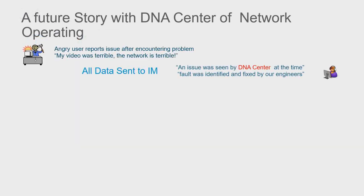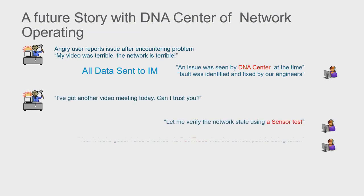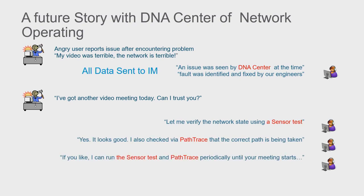Here's another example: a user calls in and says their video was terrible. The engineer looks back and says at that time we were actually having some network failures — I can see that — but they've been resolved since you called. The user says I've got a video conference with the CEO in one hour, can you guarantee it'll work? The help desk guy says let me do a sensor test and a path trace. We run the sensor test, which sends synthetic traffic emulating that call. Everything comes back with a green checkbox. The help desk says it's going to work — I'm going to run it three more times, and if any of those fail I'll get a notification. That's what the future looks like.